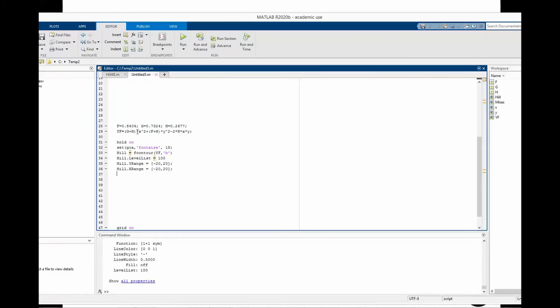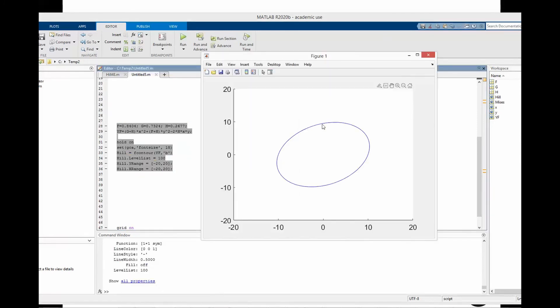So this is the code for Hill48. Let's see how the plot looks. This is the plot of Hill48 yield function in two-dimensional principal stress space.